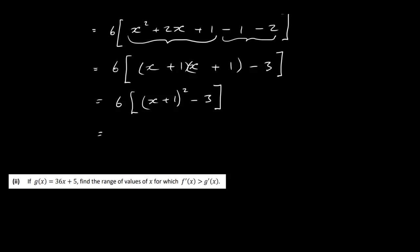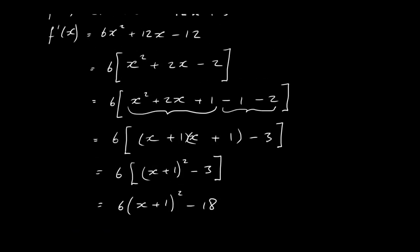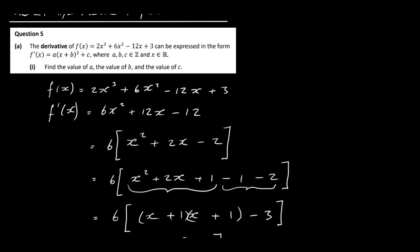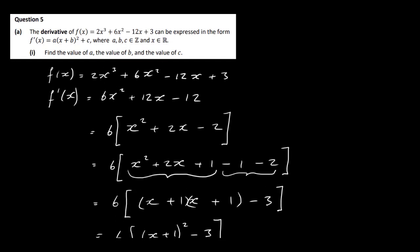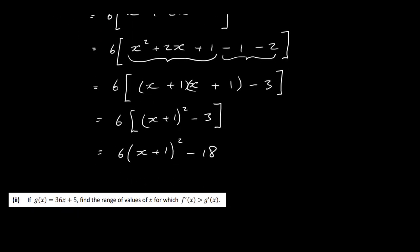Let's just multiply that out. We get 6 times x plus 1 all squared, minus 3 times 6 which is 18. So we have it in the form a times x plus b all squared plus c. Therefore a is equal to 6, b is equal to 1, and c is equal to minus 18.